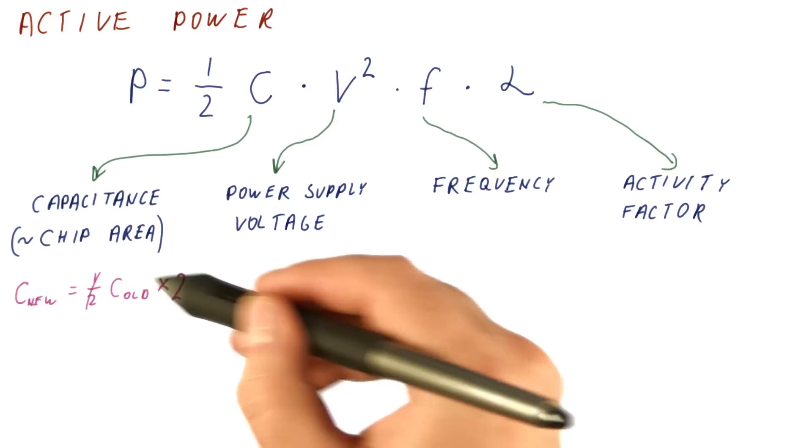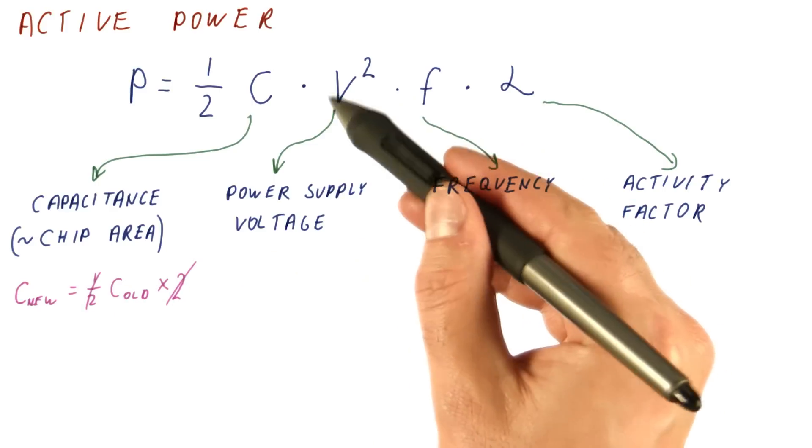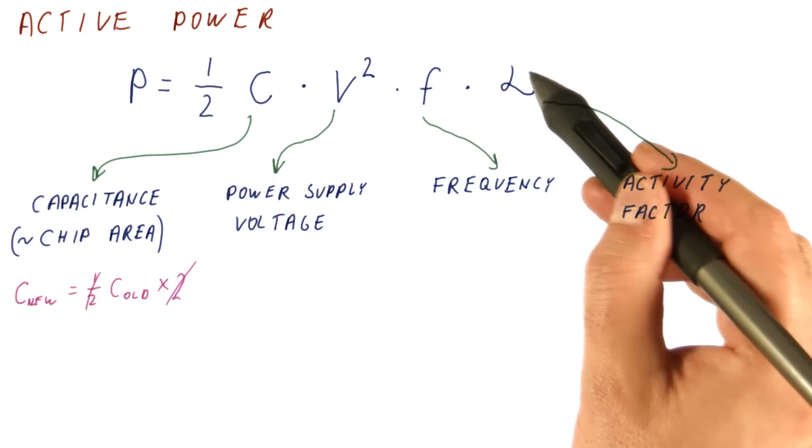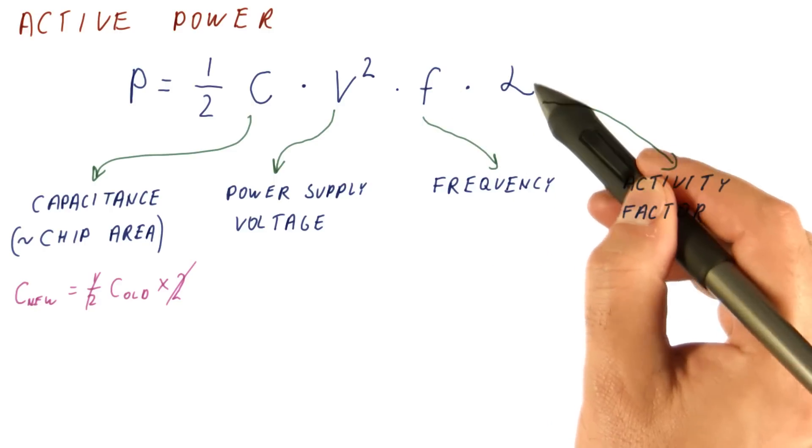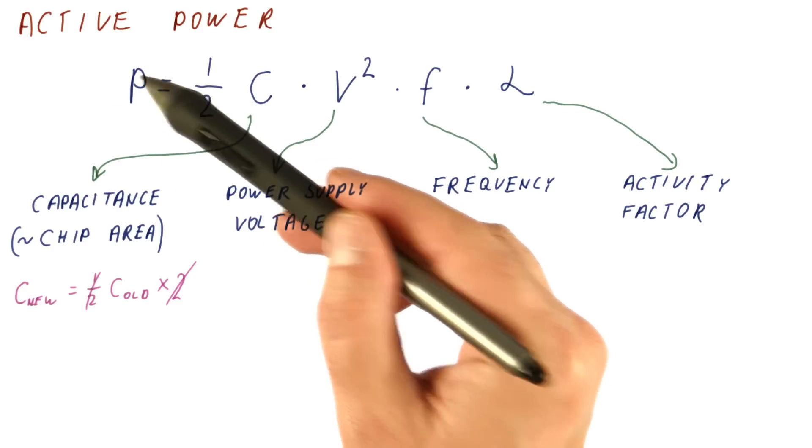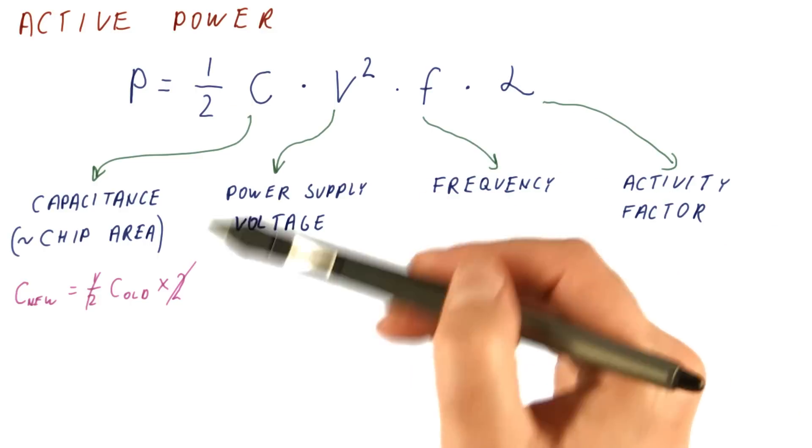so the C_new really is equal to C_old. Let's say that the voltage and the frequency stay the same, and let's say it's still the same processor design, so the same percentage of transistors are active. That means really that the active power is relatively unchanged if we do this.